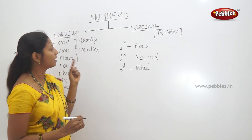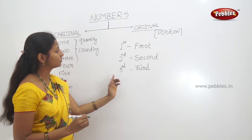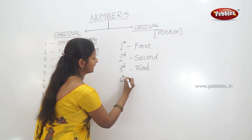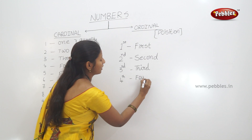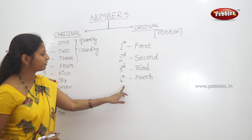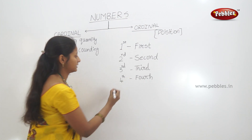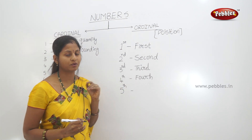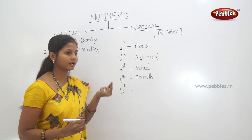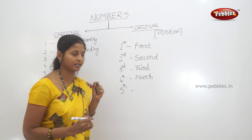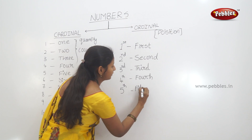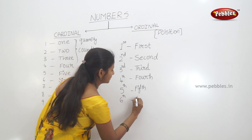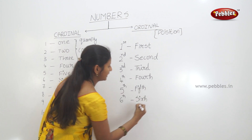Number two cardinal will be second. Number three cardinal will be third. Number 4 cardinal will be 4th — fourth. 4th plus 5th. 6th — S-I-X-T-H. 6th.